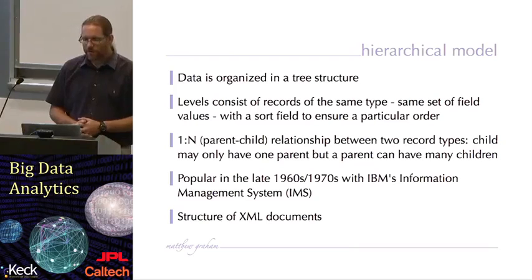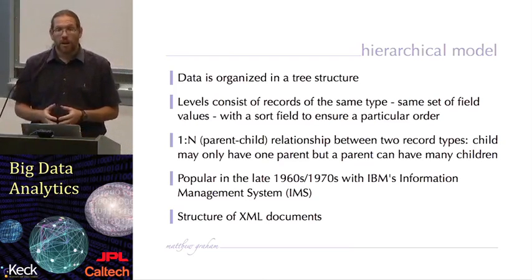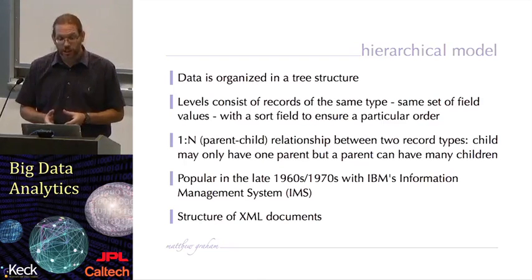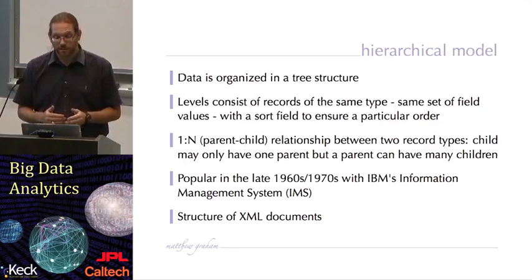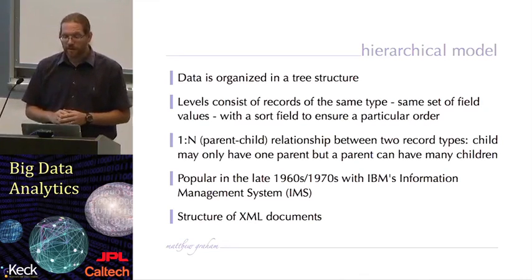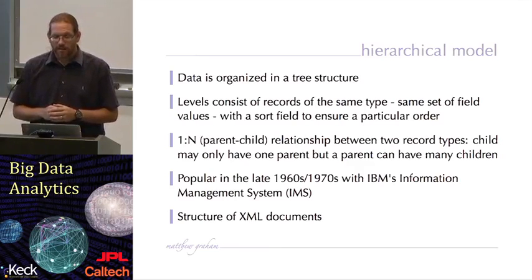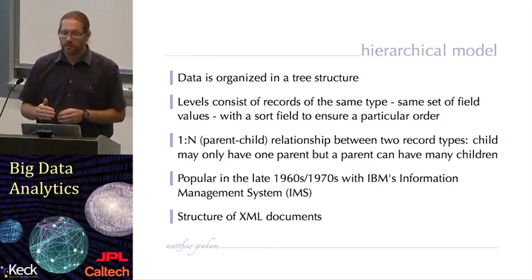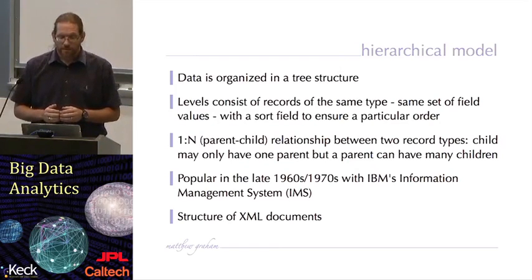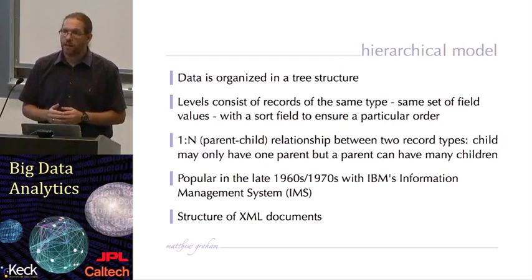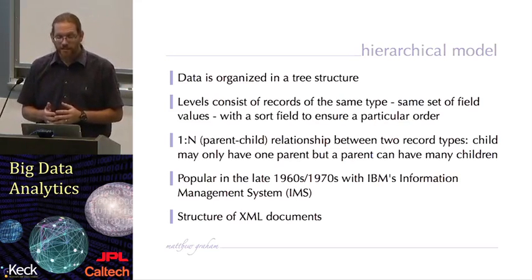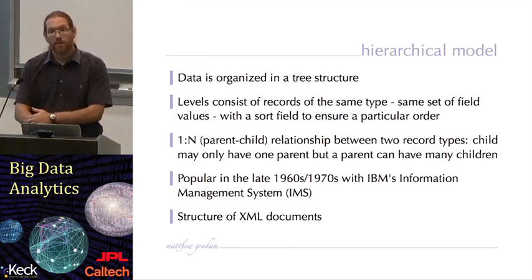A more sophisticated model is the hierarchical model. In the hierarchical model, as the name suggests, data is organized in a tree structure. You have a number of levels consisting of records of the same type — the same set of field values or measurements at a particular level — and there will also be a field on that level to ensure a particular ordering. In a tree structure with levels, you have parent objects and child objects. In a hierarchical model, there is a one-to-n parent-child relationship between two record types: a child can only have one parent, but a parent can have many children.